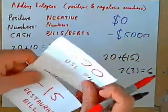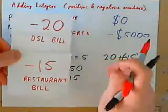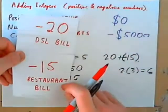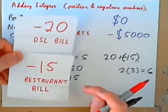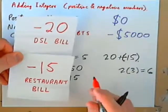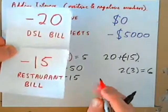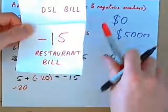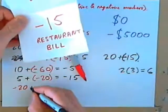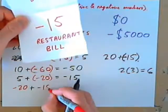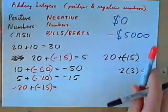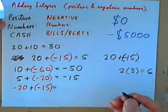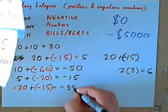What if you held in your hand the DSL bill for $20 and the restaurant bill for $15? How much money is that? Well, it's two bills. And if you add two bills together, negative 20 plus negative 15, write down what that would be. Make some parentheses around this. 20 negatives and 15 negatives. Does that make 35 negatives, right?